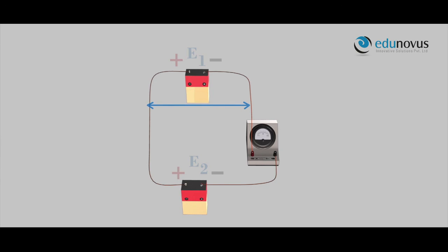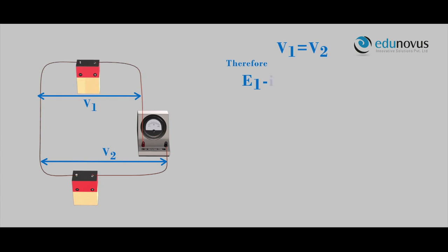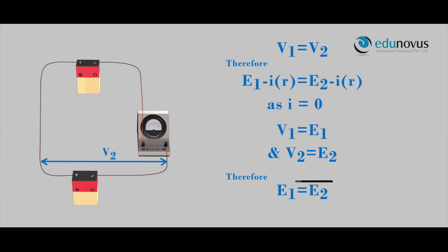In this case, the potential drop V1 equals V2. E1 minus IR equals E2 minus IR. As I equals zero, V1 equals E1 and V2 equals E2. Therefore, E1 equals E2.